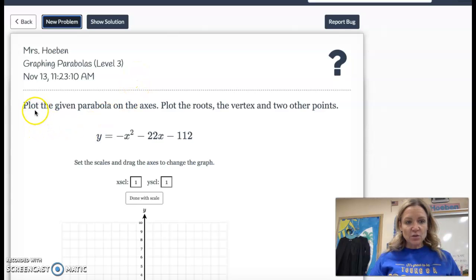The directions say you're going to plot the given parabola on the axes, plot the roots, the vertex, and two other points, which ends up being five points.